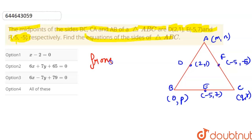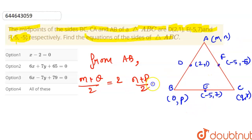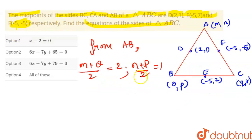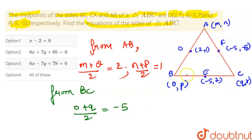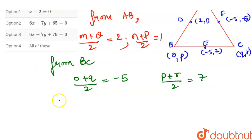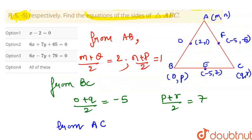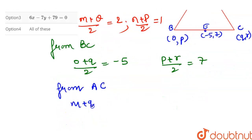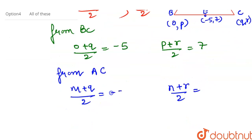Since (2,1) are the midpoints of side AB, we can write: (m+o)/2 = 2 and (n+p)/2 = 1. From BC: (o+q)/2 = -5 and (p+r)/2 = 7. From AC: (m+q)/2 = -5 and (n+r)/2 = -5.